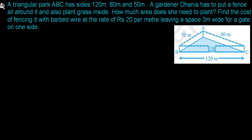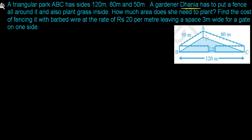Here we have another question from Heron's Formula. A triangular park ABC has sides 120 meters, 80 meters, and 50 meters, as seen in the figure. A gardener named Thania has to put a fence all around it and also plant grass inside it. They are asking: how much area does she need to plant? So we need to find the area of the triangular park, and all three sides have been given.